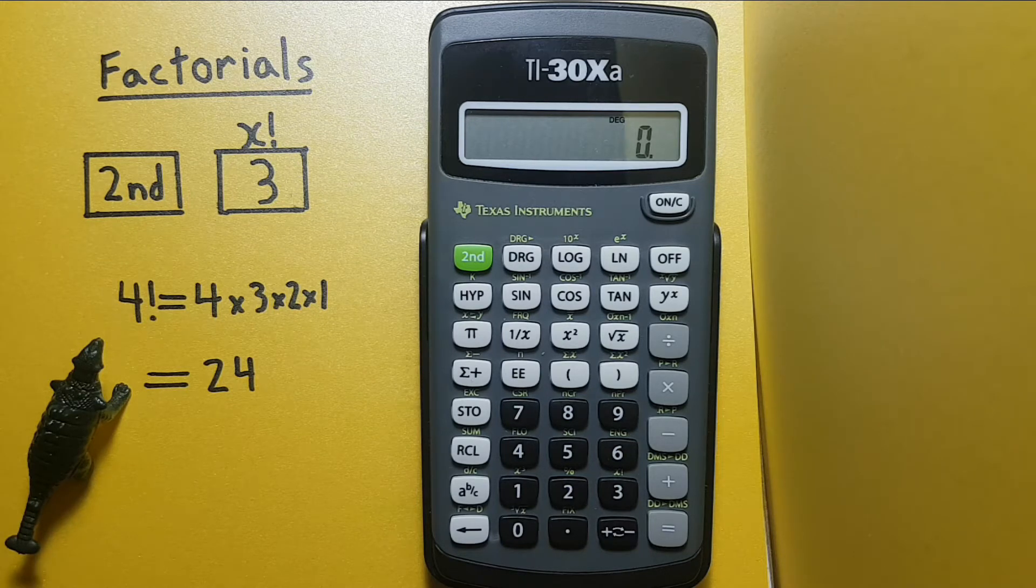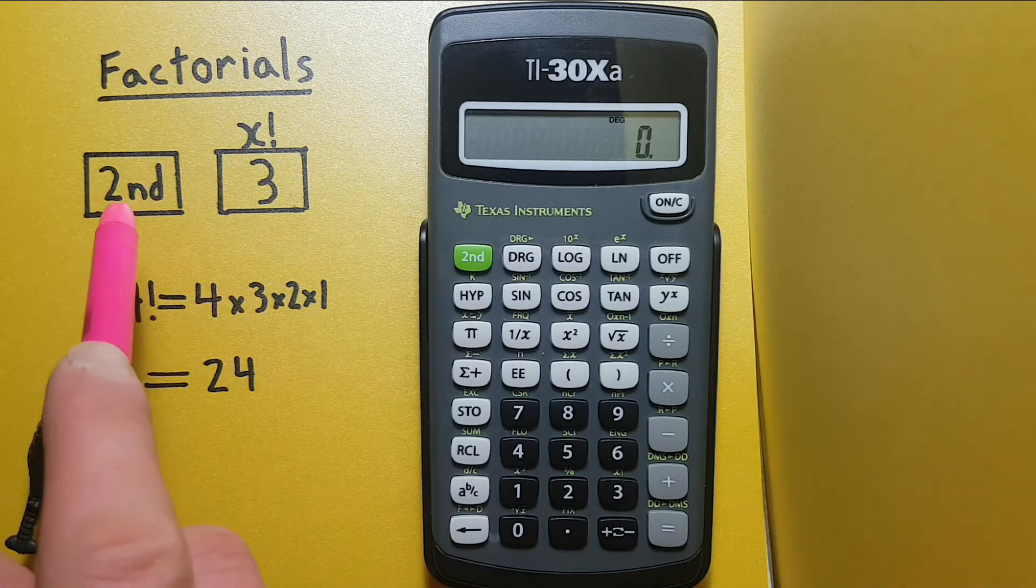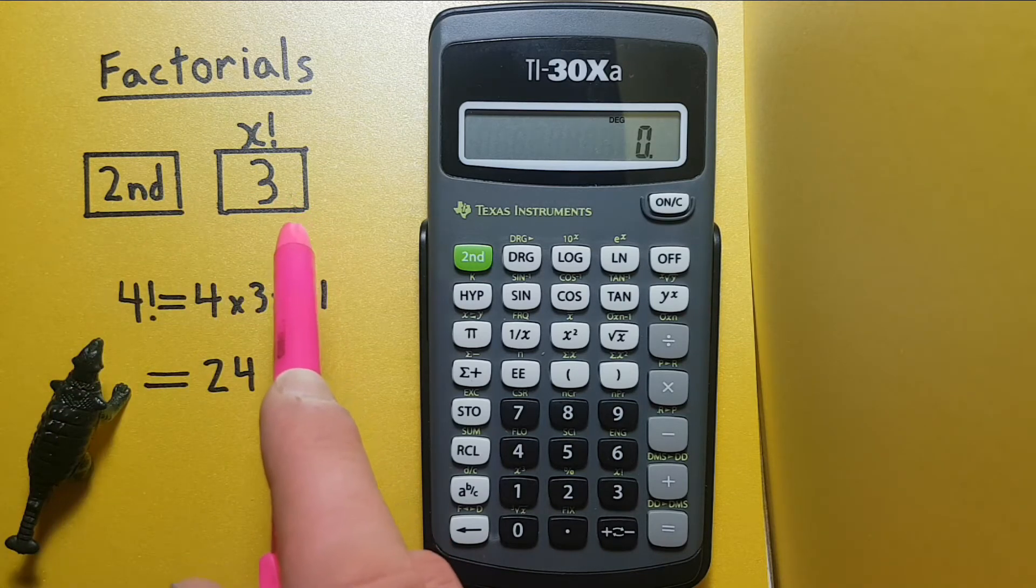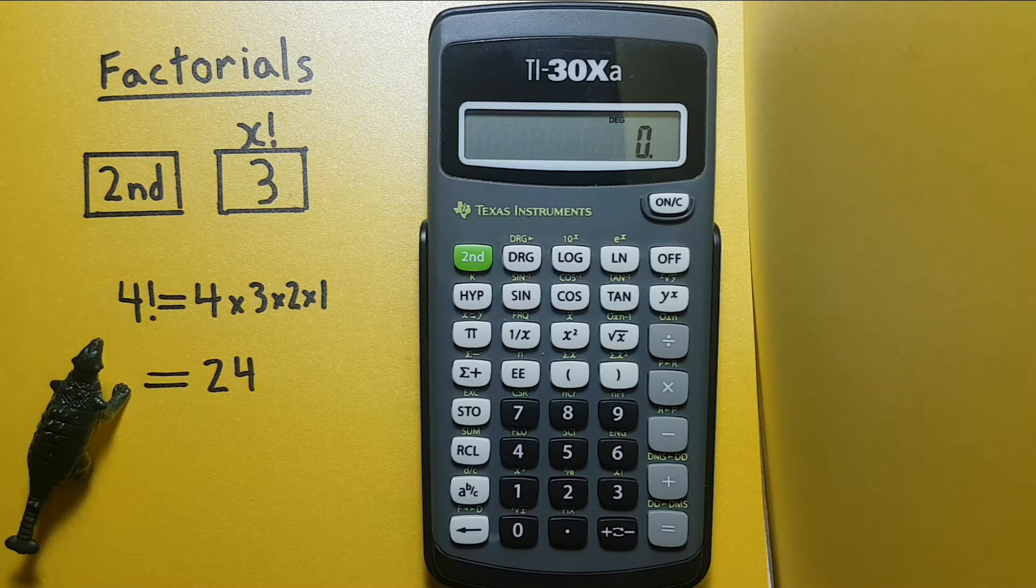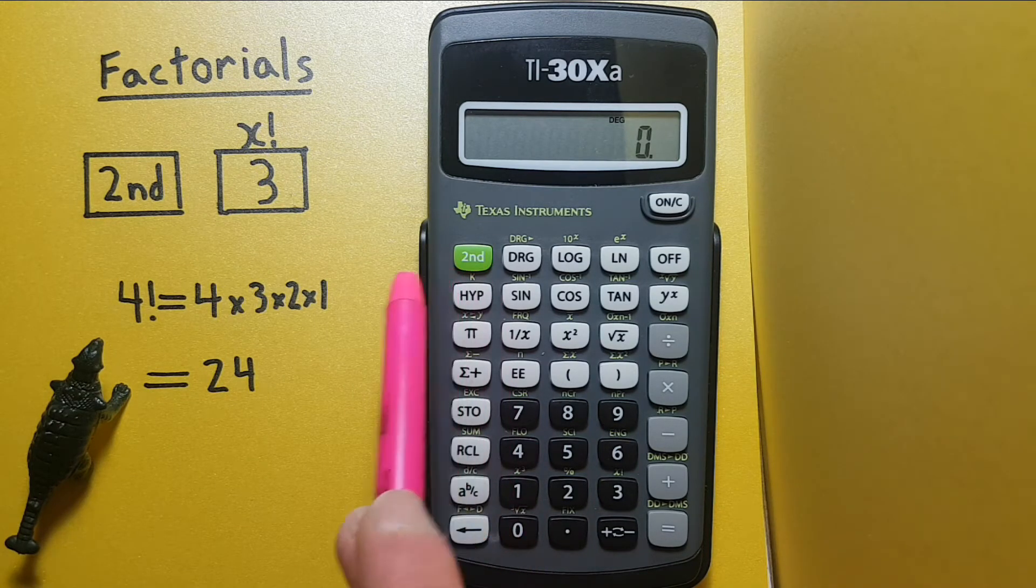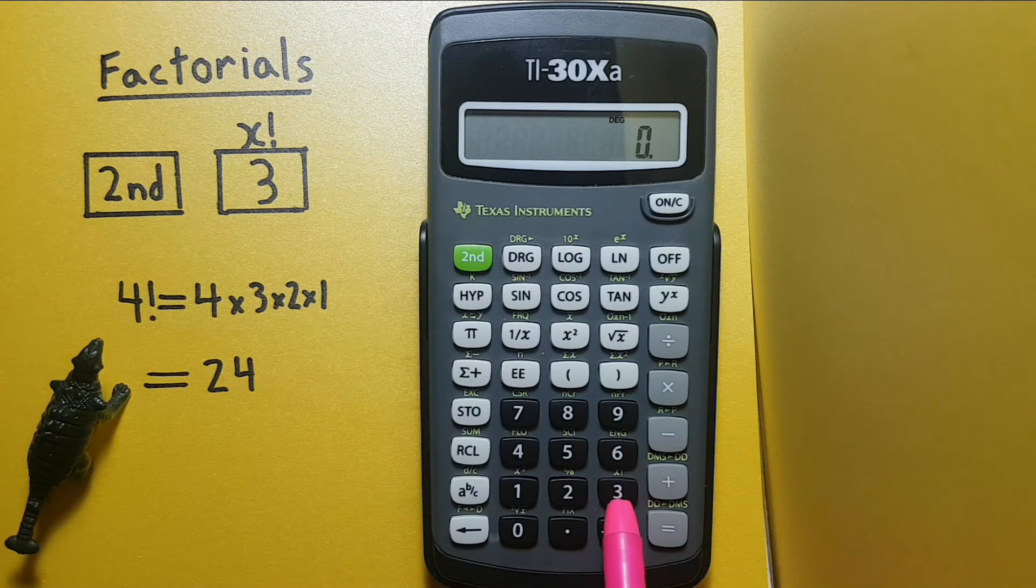Alright, to do this we'll be using the second function and three buttons. The three has this X factorial symbol over top. Second function is located right here and then this is the three factorial button.